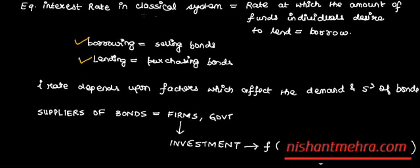People who sell bonds are borrowers, and people who purchase bonds are lenders. The factors which affect borrowing and lending will also affect the interest rate, because the interest rate is dependent upon borrowing and lending.